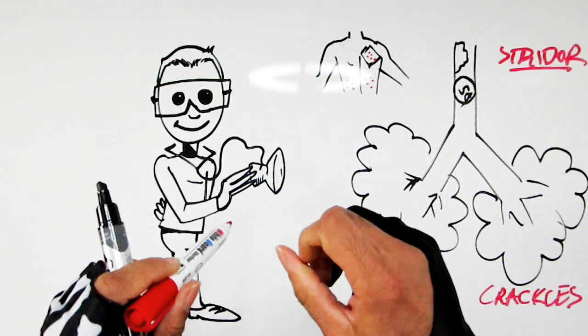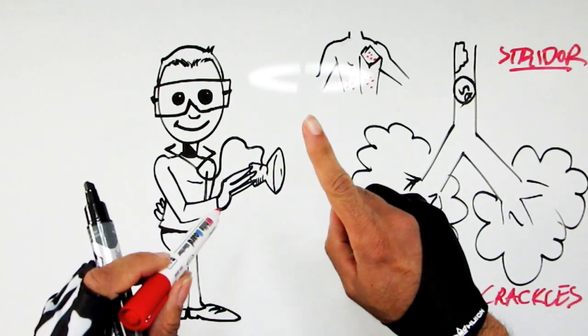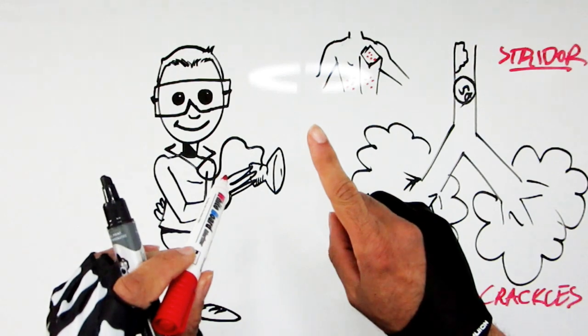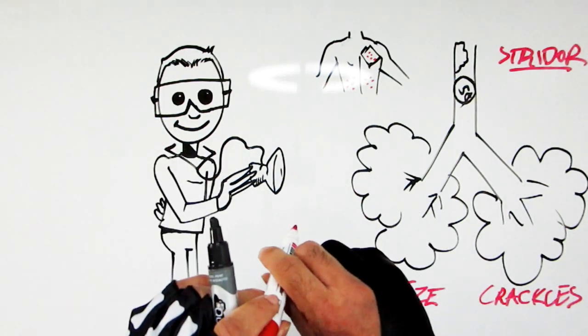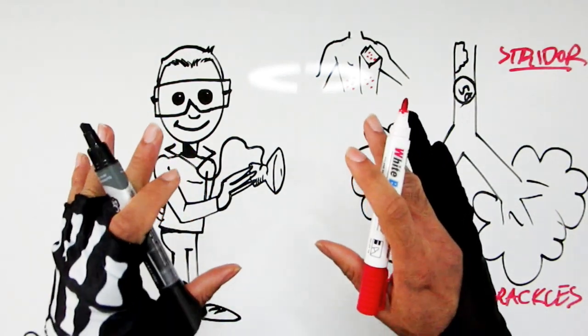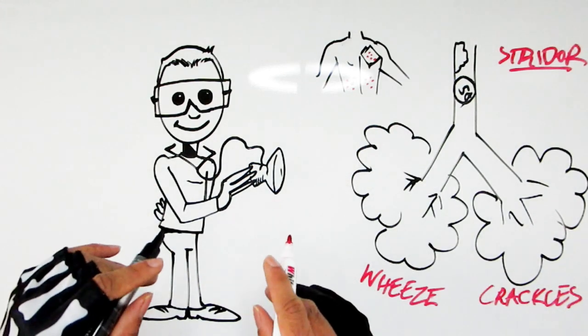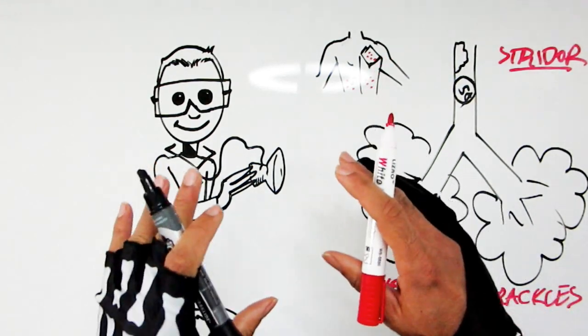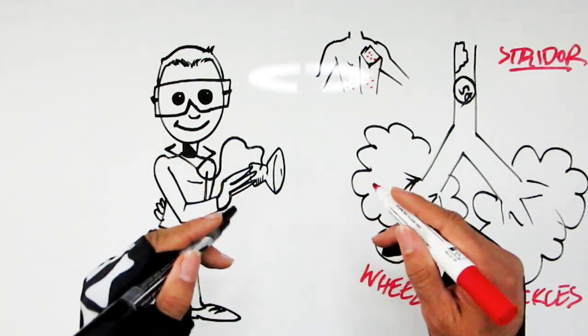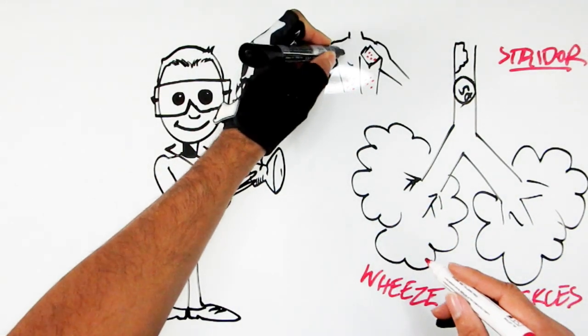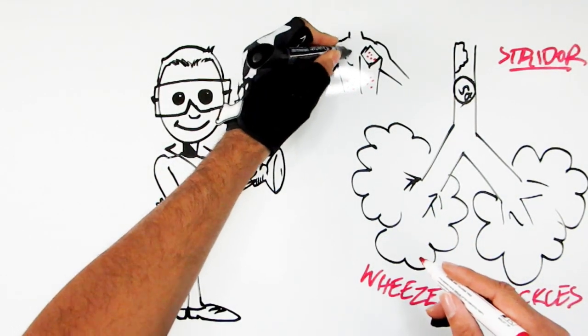So those are the three most important sounds. Now there's a little trick with this presentation. There's also a fourth sound that's also very important but it's not a sound at all. It's the absolute sound of silence and that is actually very disturbing when you hear that in a part of the lung.